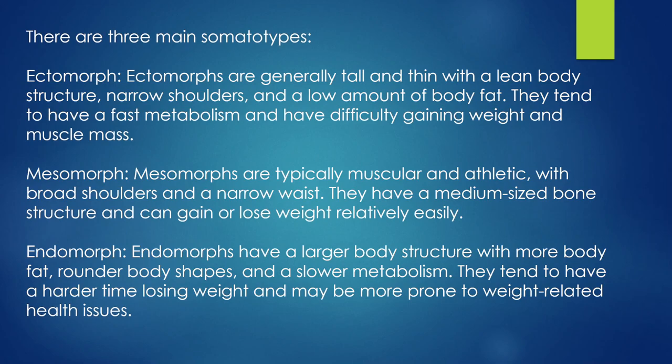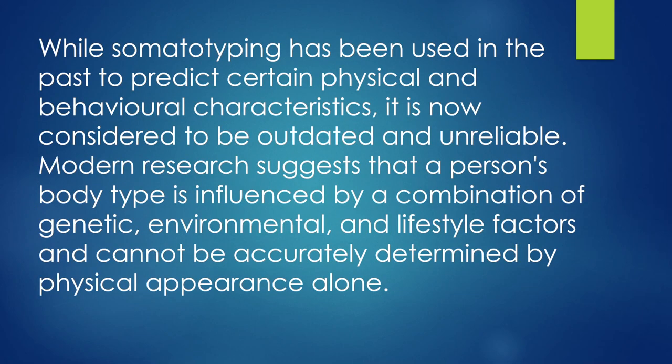While somatotyping has been used in the past to predict certain physical and behavioral characteristics, it's now considered to be outdated and unreliable. Modern research suggests that a person's body type is influenced by a combination of genetic, environmental, and lifestyle factors, and cannot be accurately determined by physical appearance alone.